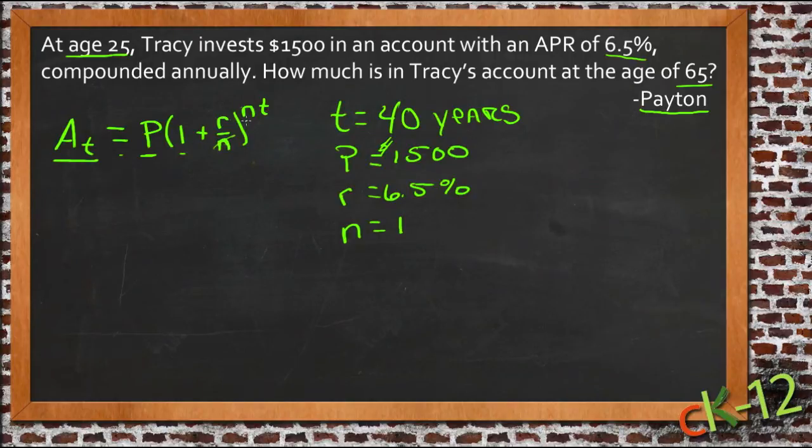And then we're going to take that amount, and we're going to raise it to the power of the number of times it's compounded, again in this case we don't care because it's 1 times something, so it's going to fall out, times the number of years it's been invested.